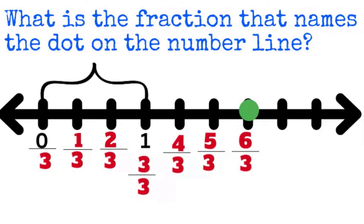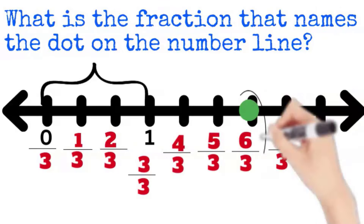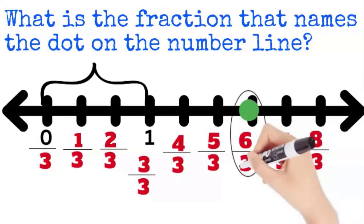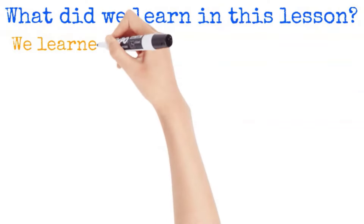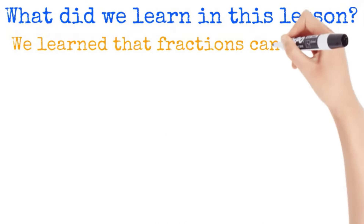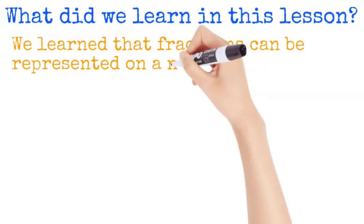But we keep going: four thirds, five thirds, six thirds, seven thirds, eight thirds. The dot is on six thirds. So six thirds is the fraction that names the dot on the number line.